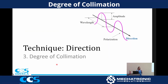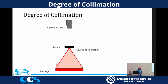In a really nerdy way, my favorite technique in machine vision lighting is degree of collimation. I love this technique because it's so underappreciated — people kind of overlook it — but it actually has a lot of impact on your machine vision applications. The degree of collimation is: if you take your sample and have one point on your sample, the angle at which the light is hitting that point is your degree of collimation.